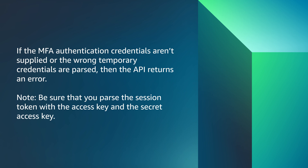Note: be sure that you pass the session token with the access key and the secret access key. And now you know how to resolve or avoid the error 'The AWS Access Key ID you provided does not exist in our records' when you access an Amazon S3 bucket with an AWS SDK, AWS CLI, or an application. Thank you for watching and happy cloud computing from all of us here at AWS.